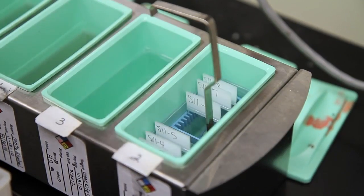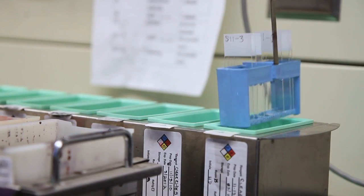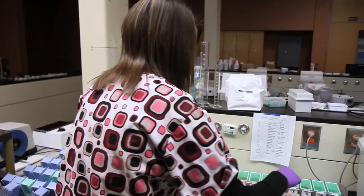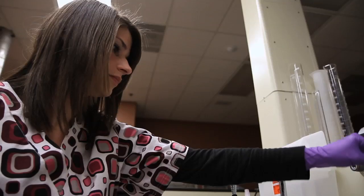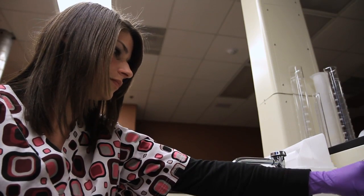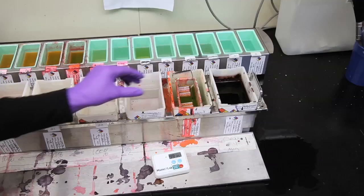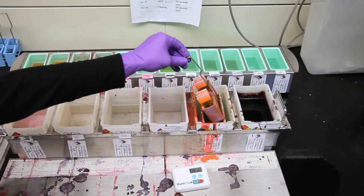For an H&E stain you would start out clearing all the paraffin out of it and then put it through alcohol and then into hematoxylin which stains the nuclei and then you get it to eosin which stains the cytoplasm and erythrocytes and then a few more steps if you have a basic H&E stain.